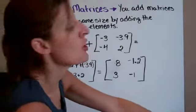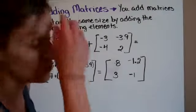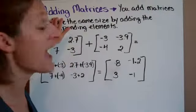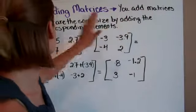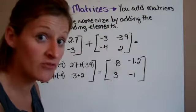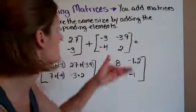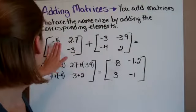With these matrices, we can actually add, subtract, and multiply using them. When I'm adding matrices, meaning 2 or more, you're going to add matrices that are the same size, meaning they have the same number of rows, same number of columns, by adding the corresponding elements. It's very easy.